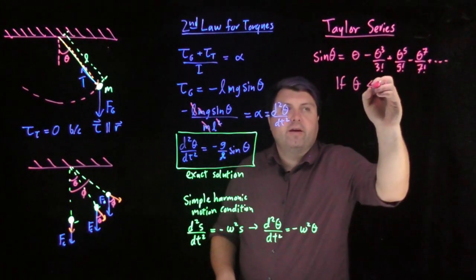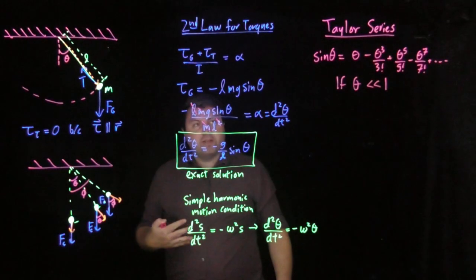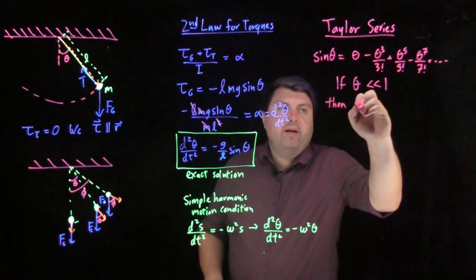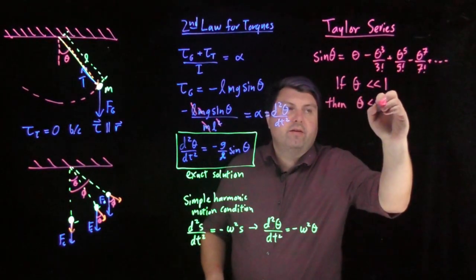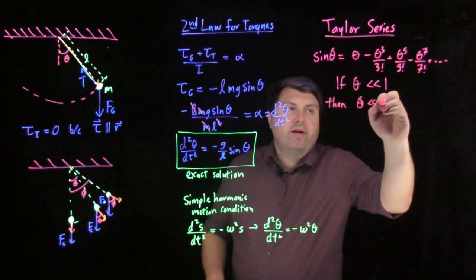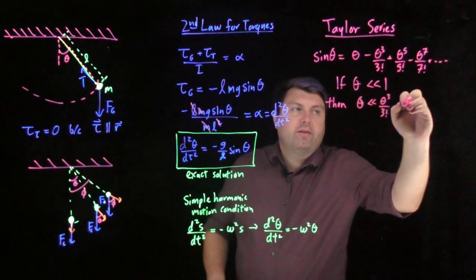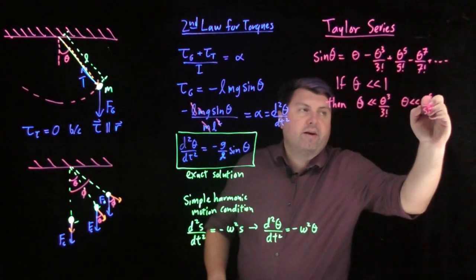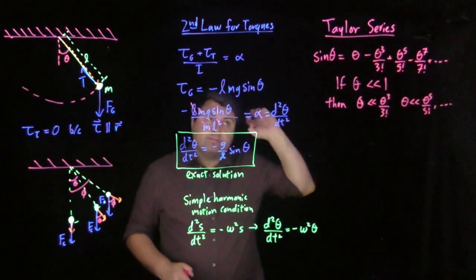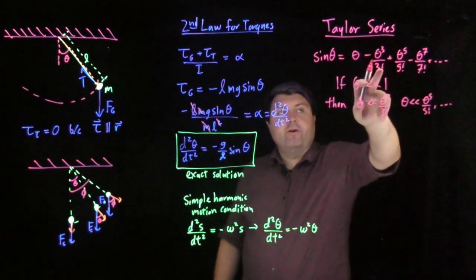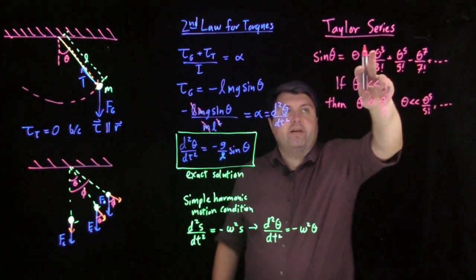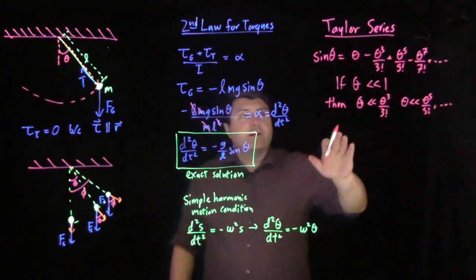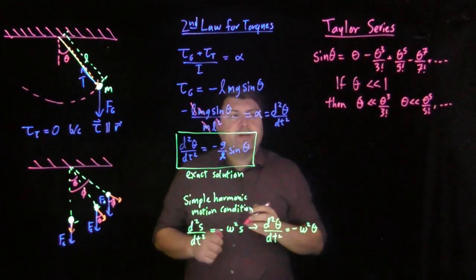So we're going to actually make an even stronger assertion. If we say our theta is much, much less than one, then theta is going to be larger than, and in fact, much, much larger than theta to the third over three factorial. Theta is going to be much larger than theta to the fifth over five factorial. And we can keep making these arguments, that if we are dividing by these exceedingly large numbers, and we're taking a number less than one to a higher power, which makes it even smaller, then only this number is going to count as opposed to these other ones.